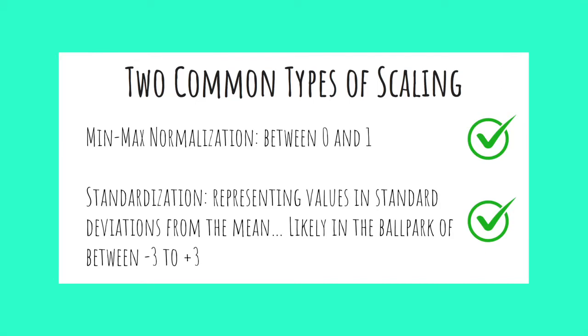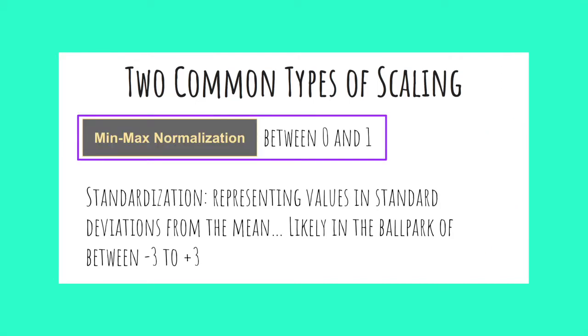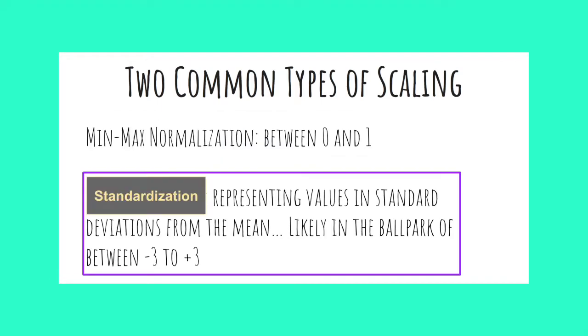The scale we choose is not super important as long as we pick reasonable numbers for our range of values. The two most common ranges are zero to one by using min-max normalization, or approximately negative three to positive three when using standard deviations from the mean. The important thing is that each feature is on the same scale.